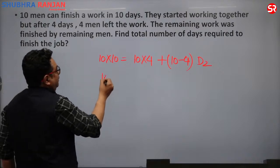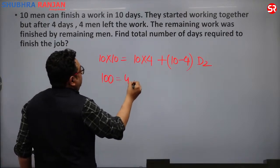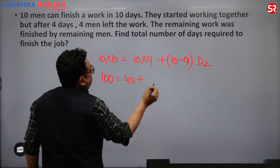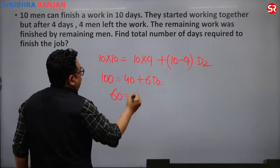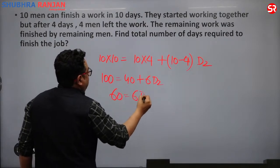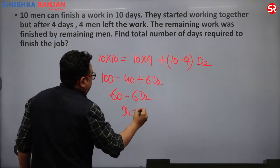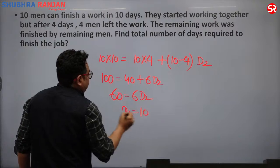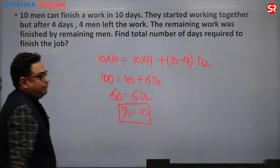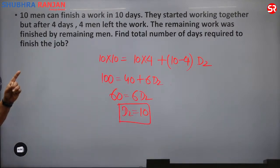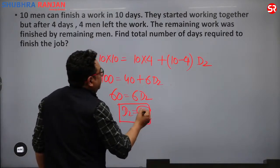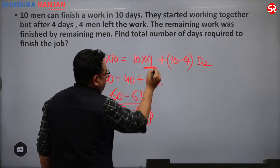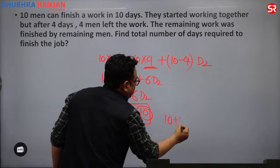The equation is: 100 equals 40 plus 6 × D2, which means 60 equals 6 × D2, so D2 equals 10. But the question asks for total number of days required to finish the job, so total equals D2 plus 4 equals 10 plus 4 equals 14 days.